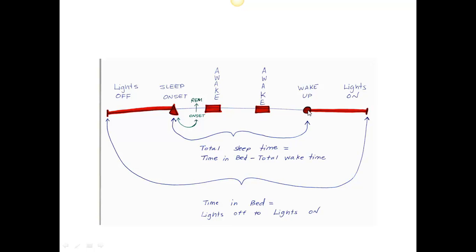The patient wakes up and shortly after they wake up, then the lights are turned on. So when we calculate total sleep time, total sleep time is equal to the time in bed minus these periods of wakefulness. It's this time in bed period minus any awakenings.